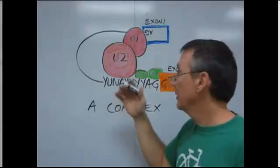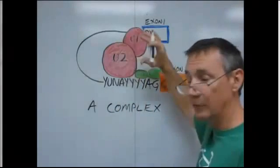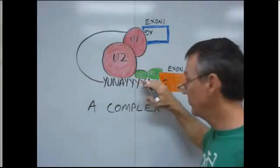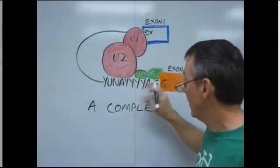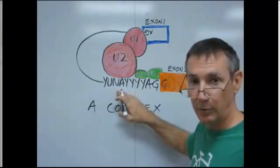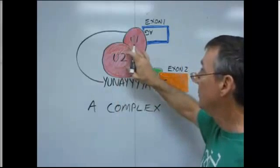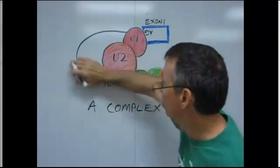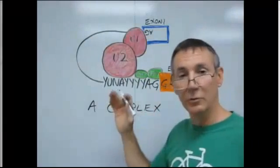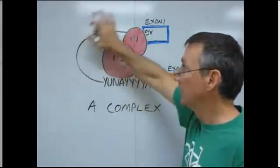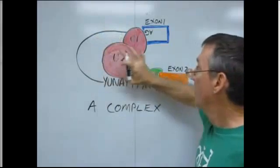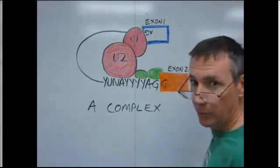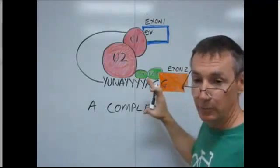The next thing that happens is that the U2 snRNP binds. The U2 snRNP requires the U2 accessory factors, U2AFs, in order to bind. It binds next to those so it'll be in contact with the branch point. Then the U2 and U1 snRNPs bind to each other. In the process, that folds the intron over into a loop — and this loop can be very long, it can be thousands of nucleotides. By folding it over like this, it brings the first exon into close proximity with the second exon that it's going to be joined to.